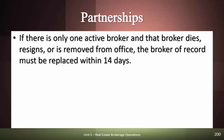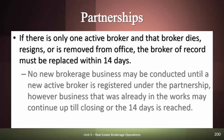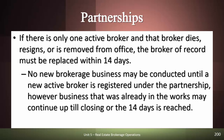Any change in the composition of a partnership must be reported to the DBPR. If the partnership has only one active broker and that broker dies, resigns, or is removed from office, that broker needs to be replaced within 14 calendar days. No new brokerage business may be conducted by the partnership or by a licensee registered with the partnership until a new active broker is identified and registered. However, business that was already in the works — like a listing that wasn't closed — may continue but only up until those 14 days are reached.